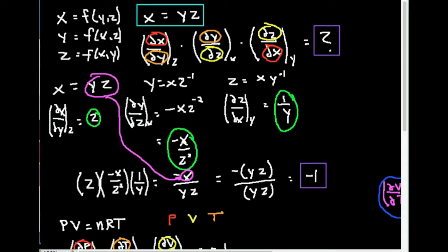I'll show you exactly why that's important after we discuss the rule itself. It turns out to be one of the most important rules, and it basically says that if I take the partial of x with respect to y at constant z, times the partial of y with respect to z at constant x, times the partial of z with respect to x at constant y, it equals something—we want to figure out what that something is.